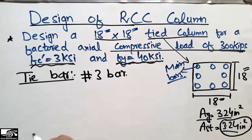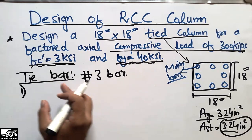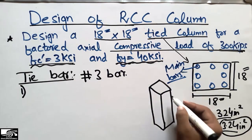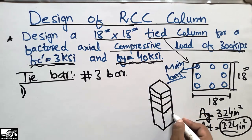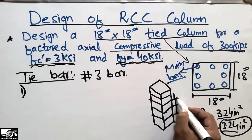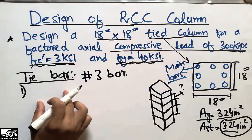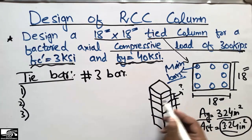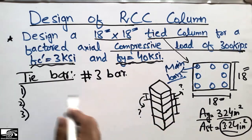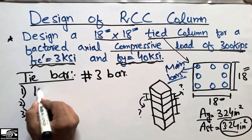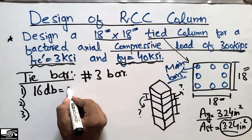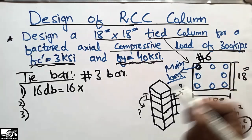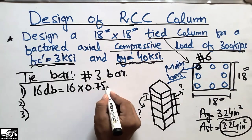To design the tie bars, assume we use #3 bars. There are three formulas for tie spacing, and the least value governs. Formula 1: 16 × diameter of longitudinal bar = 16 × 0.75 in = 12 inches. (The #6 bar diameter is 0.75 in.)